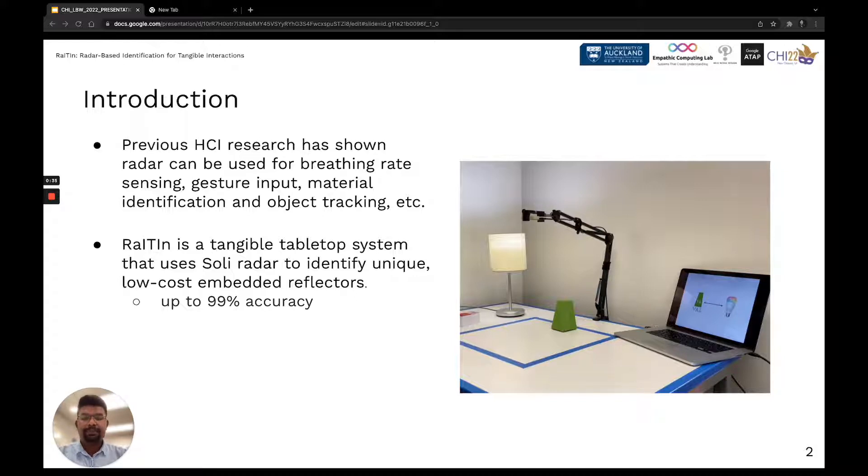To that end, we present RaITIn, a tangible tabletop system that uses miniaturized radar to identify unique low-cost embedded reflectors with an accuracy up to 99%.